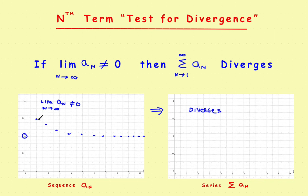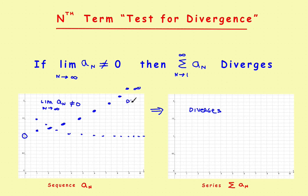Let's talk about one more case. That first sequence leveled off at one, so the limit existed and was one. But you might have a sequence where the dots take off toward infinity. In that case the limit of the sequence does not exist. So whether the sequence settles on a fixed number or goes way up to infinity, in either case the terms are not approaching zero, and the series diverges.